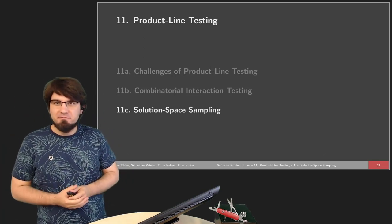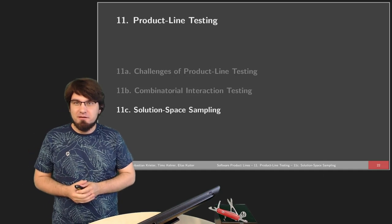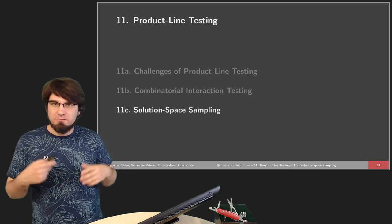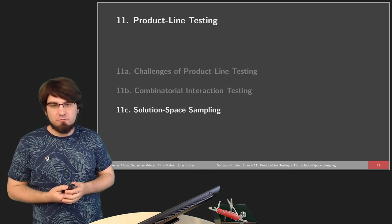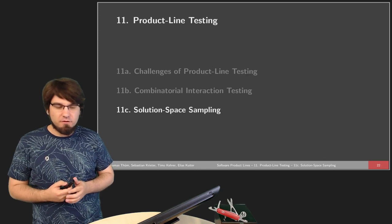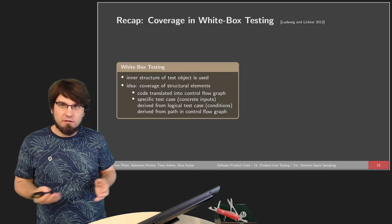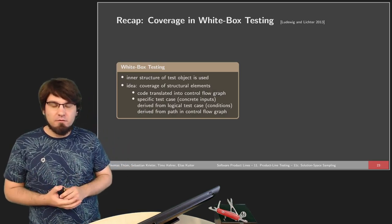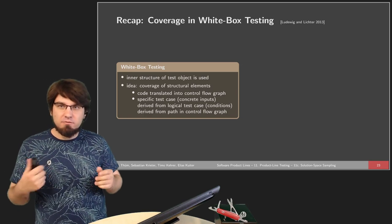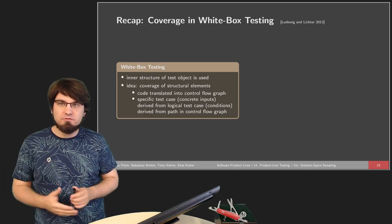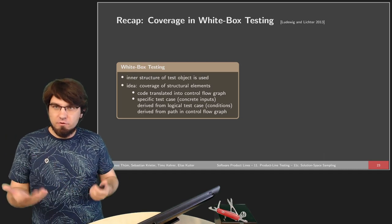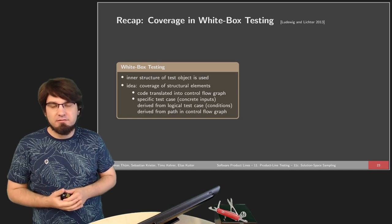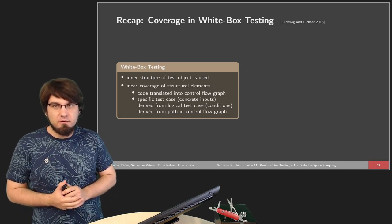Welcome back to part three. We're now talking about a more white box approach, specifically solution space sampling and other techniques that can be used with combinatorial interaction testing. As a small reminder: white box testing, as opposed to black box testing where we ignore all the source code, now has us consider the actual source code or, in the case of product lines, the implementation artifacts.